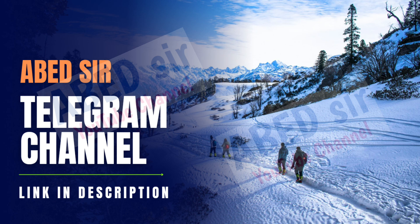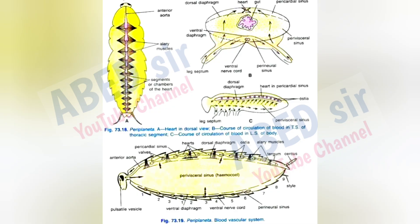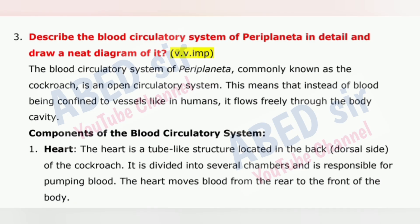Next important question is 3: Describe the blood circulatory system of Periplaneta in detail and draw a neat diagram of it. The blood circulatory system of Periplaneta, commonly known as the cockroach, is an open circulatory system. This means that instead of blood being confined to vessels like in humans, it flows freely through the body cavity. Components of the blood circulatory system — 1. Heart: The heart is a tube-like structure located on the dorsal side of the cockroach. It is divided into several chambers and is responsible for pumping blood. The heart moves blood from the rear to the front of the body.